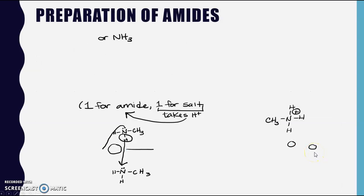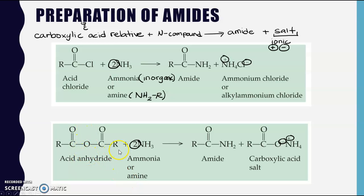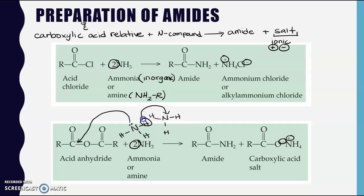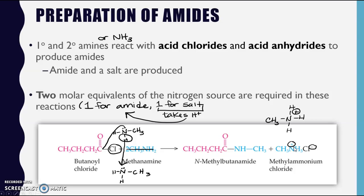We see a really similar thing with the acid anhydride: one of our ammonias goes to bond and break the anhydride, but it has to give off a hydrogen ion to the other ammonia for that to occur. What we have left is a carboxylate ion, and those two are attracted to each other since the carboxylate portion is negative and the ammonium is positive after gaining the proton - so we end up with a carboxylate salt.